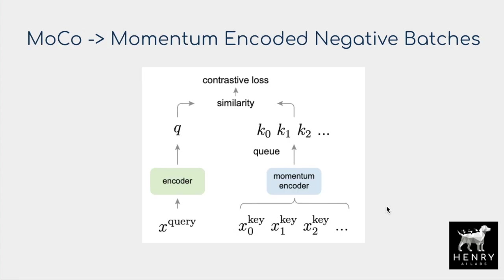The SimCLR paper shows that large negative batches stabilize contrastive self-supervised representation learning. But if you're running experiments on a Google Colab GPU, you can't run a negative batch of 4,096 128×128 images. For that reason, the Momentum Contrastive Encoder (MoCo) paper was developed, using a momentum encoder as a more efficient way to handle negative batches. Rather than storing full images, you store a queue of vector representations. Additionally, MoCo uses a lagging update of the network — the encodings may be from four training steps ago, not the most recent version.